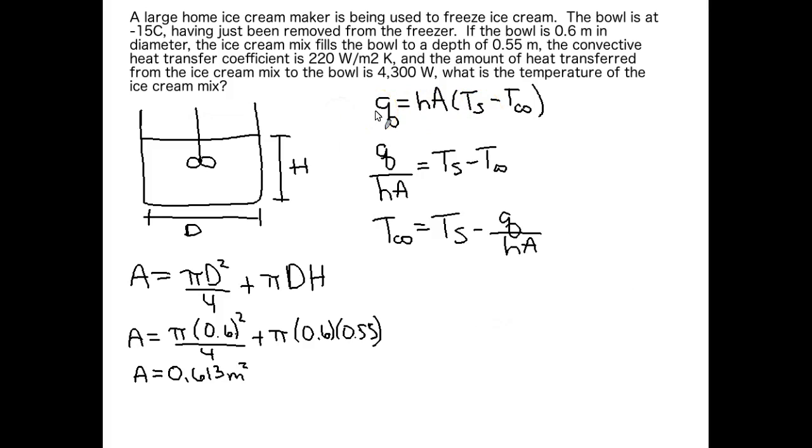So when we plug in the q that we're given here (4300 watts), we need to plug in negative 4300 watts to make these numbers work out properly and to get the correct T infinity. Otherwise, our numbers are not going to work out. T infinity needs to be greater than Ts.